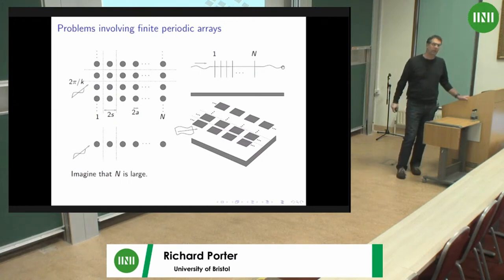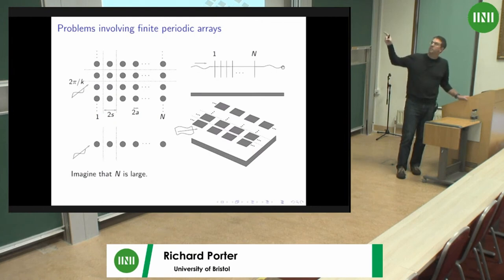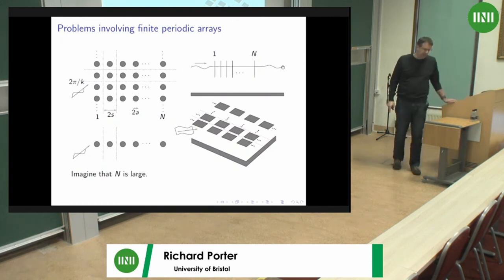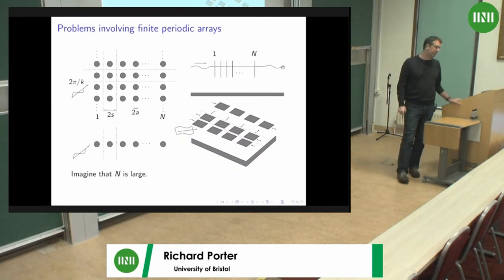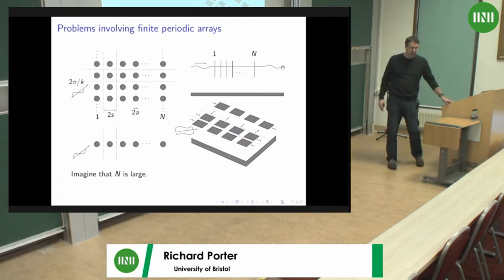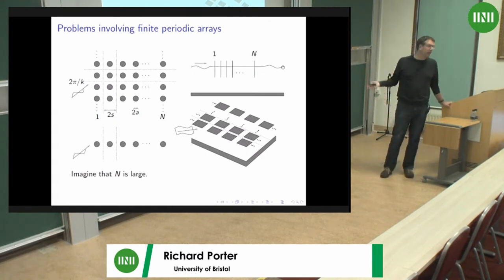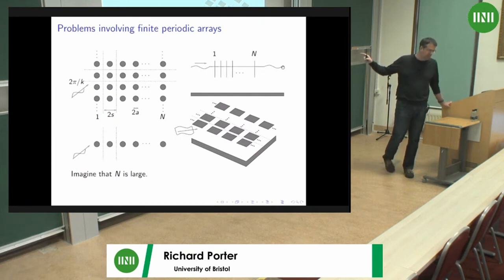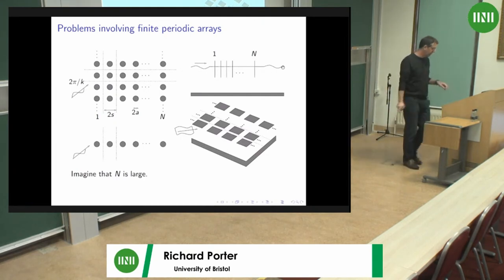Moving down to the bottom left-hand corner, I've just got one such row — a single line of cylinders. This is something of interest to people like Ian and Luke. The example I'm going to give is in the top right-hand corner: a water wave problem where you have surface gravity waves coming in from the left, scattered by a finite periodic array of vertical barriers. This is an incompressible fluid; the wave energy is carried by the surface, and some passes underneath. The final picture in the bottom right-hand corner is three-dimensional work in progress — no results today.